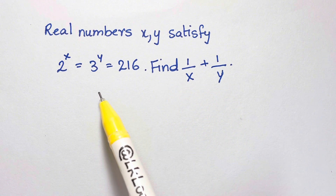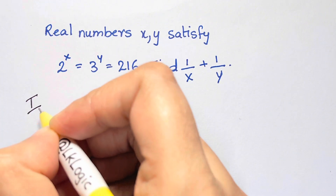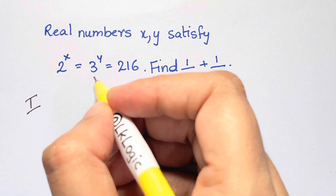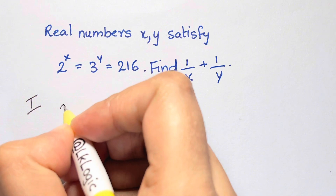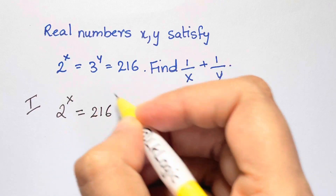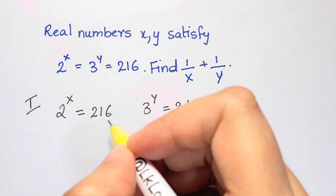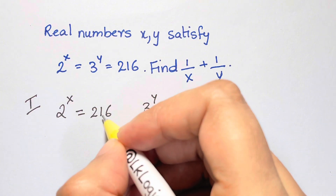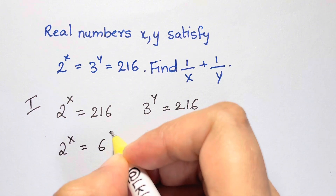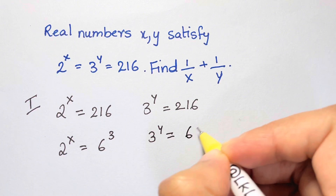I'm going to show you two methods. The first method includes logarithms. We have 2 to the x equal to 216 and 3 to the y also equal to 216. Notice that 216 is just 6 cubed, so we write 2 to the x equal to 6 cubed and 3 to the y equal to 6 cubed.